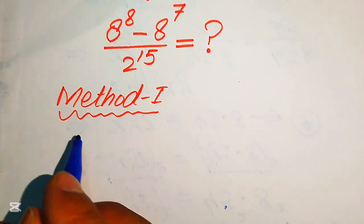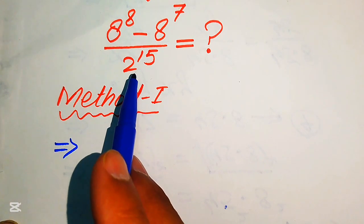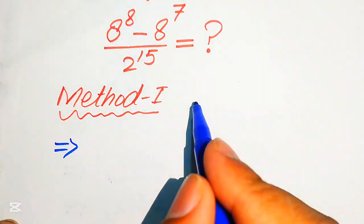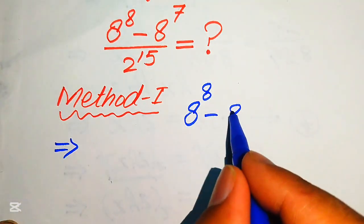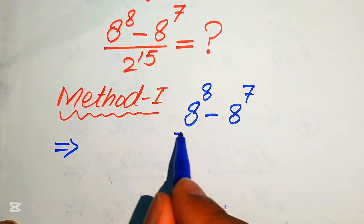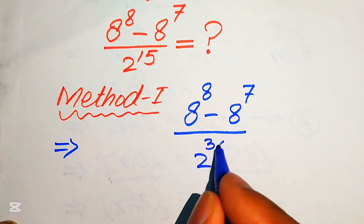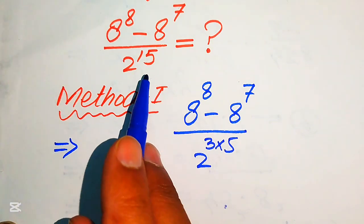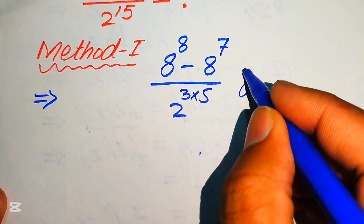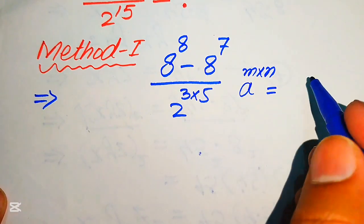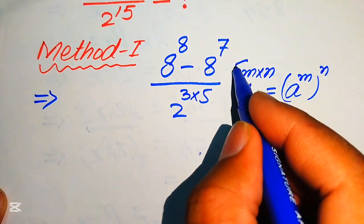In the first method, we need to focus on the denominator term only. We write it as 8 to the power of 8 minus 8 to the power of 7, divided by 2 to the power of 3 multiplied by 5. We know that 3 times 5 equals 15. We use the exponent law: a to the power of m multiplied by n equals a to the power of m, to the power of n.